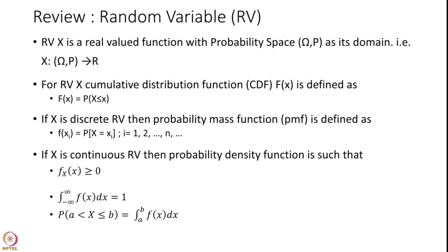In case X is a continuous random variable, there is a probability density function attached to it, defined with small f of x, where f of x is greater than 0 — it is a positive function. The area under the complete curve of f of x is 1, that is the integral from minus infinity to infinity of f of x dx equals 1, and the probability that X lies between a and b is the integral from a to b of f of x dx.